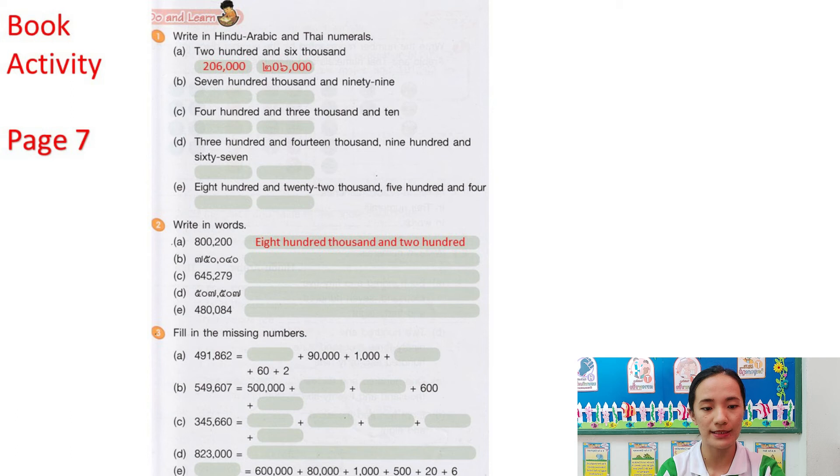So, blank plus ninety thousand. What is the answer? It is four hundred thousand. So, again, four hundred thousand plus ninety thousand plus one thousand plus blank. What is missing? It is eight hundred plus sixty plus two.